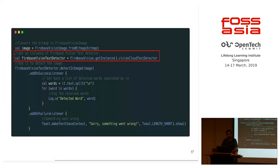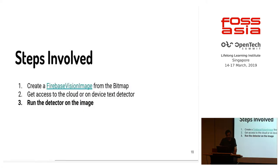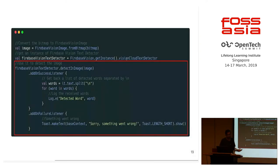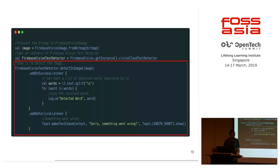This is the Firebase Vision class — you get an instance of that class and get the Firebase Vision cloud text detector. If you want to use the on-device API, you can simply call vision text detector. The API is documented very well, so you can also look at the documentation to understand how it works. Once this is done, the next step is to run the detector on the image — Firebase Vision text detector dot detect an image. You pass in the image and attach listeners: a success listener, a failure listener, and a completed listener. In the success listener, you get a single string containing all the words in the text document, with new lines separated by the newline character.